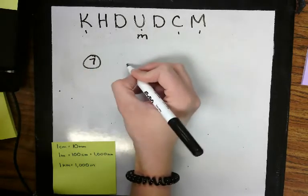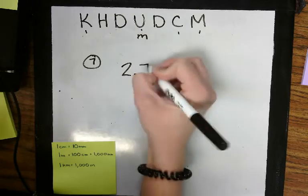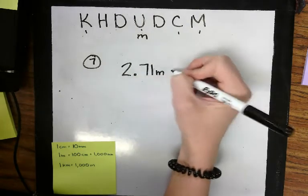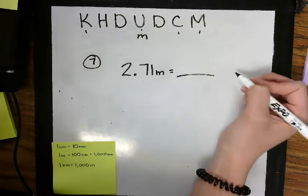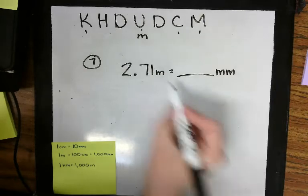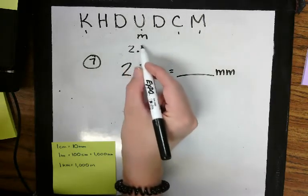Number 7 is 2.71 or 2 and 71 hundredths meters. They are asking us how many millimeters that is.